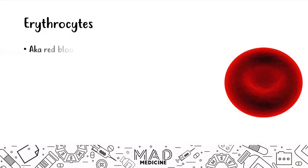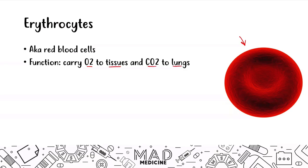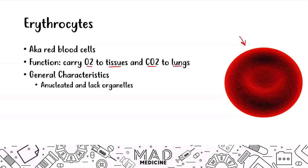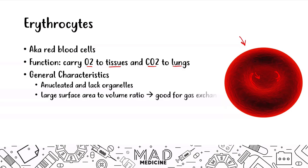This right here is a red blood cell, aka an erythrocyte. This is a colored microscopic image of a red blood cell and what it looks like. The function of a red blood cell is to carry oxygen to the tissues and carbon dioxide to the lungs. Its general characteristics are that it is anucleated and lacks organelles, which adds to the central pallor — this little divot in the red blood cell. The red blood cell also has a large surface area to volume ratio, which is good for gas exchange, allowing it to exchange CO2 for oxygen and vice versa.